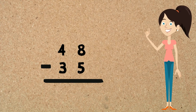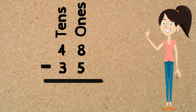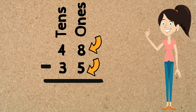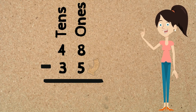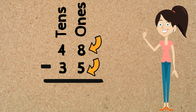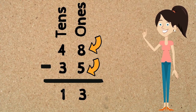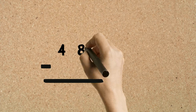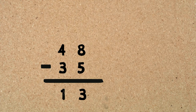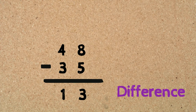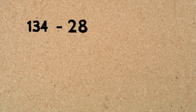To start subtracting, just like in addition, we always start with the ones column and make our way to the tens, always subtracting the bottom number from the top. So we start with 8 take away 5 equals 3, then 4 take away 3 equals 1. We can say 48 take away 35 equals 13, or the difference between 48 and 35 is 13.